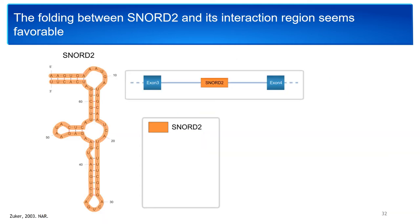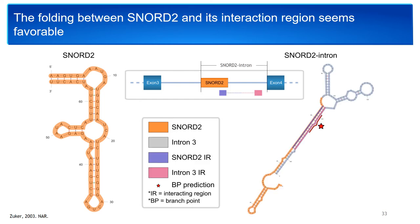To get more insight into this interaction, we used the RNA secondary structure prediction tool Mfold to fold SNORD2 with the downstream intron region. Here is the predicted secondary structure of SNORD2, which is a standard conformation for a box C/D snoRNA. The predicted folding of SNORD2 with the downstream intron region shown in gray has a low minimum free energy, suggesting this conformation is favorable. The predicted branch point, represented by the red star, is located in the middle of the predicted RNA interaction region, suggesting that base pairing of the branch point with the SNORD2 sequence could disrupt binding of splicing factors to the branch point and consequently impact the splicing of the next exon.